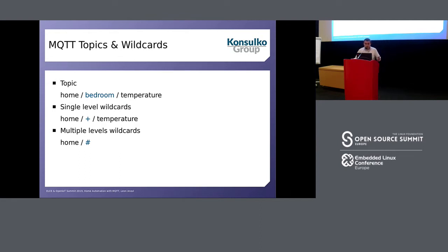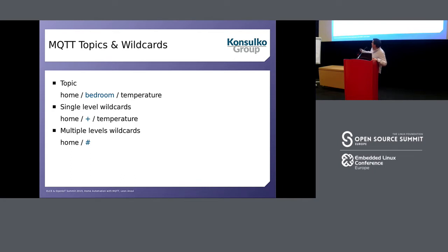Here are the examples. The first topic is home/bedroom — that's for a single room. However, you can have the same for your living room, kitchen, and so on. You can use the single-level wildcard with the plus sign, meaning you'll receive all messages with topics that have matching levels on either side. And of course you can have a multi-level wildcard, which means you'll receive all messages starting with the prefix 'home' in this example.